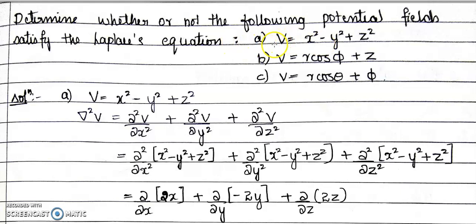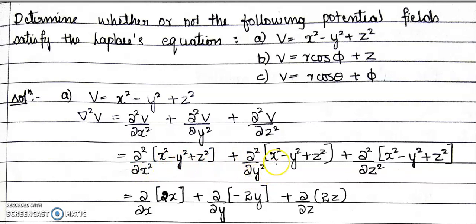For Case 1, V = x² − y² + z². We know that del²V in the Cartesian coordinate system is written as ∂²V/∂x² + ∂²V/∂y² + ∂²V/∂z². Substituting V = x² − y² + z², we get ∂²/∂x²(x² − y² + z²) + ∂²/∂y²(x² − y² + z²) + ∂²/∂z²(x² − y² + z²).